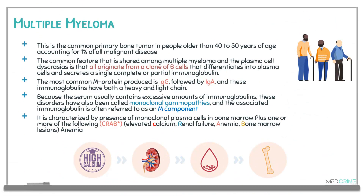Multiple myeloma is a common primary bone tumor accounting for about 1% of all malignant cases and commonly affects older people over 40 to 50 years of age. All plasma cell dyscrasias originate from a clone of B cells that differentiate into plasma cells and secrete a single complete or partial immunoglobulin. The most common M protein produced is immunoglobulin G, followed by immunoglobulin A, and these immunoglobulins have both heavy and light chain components.